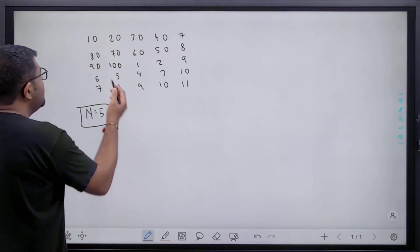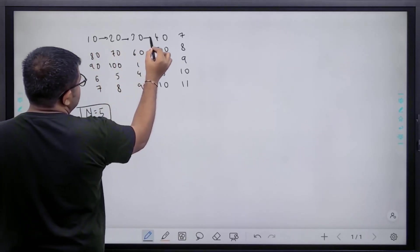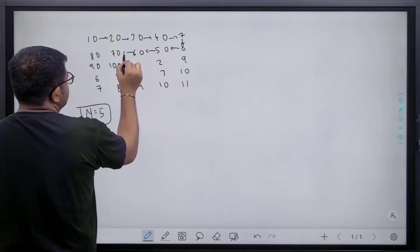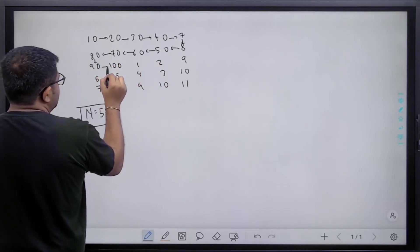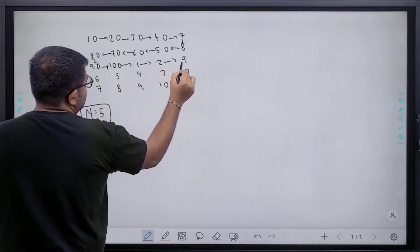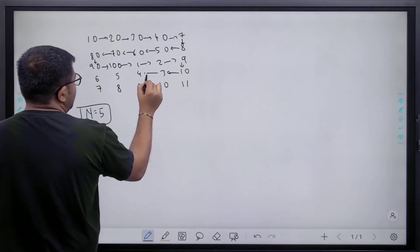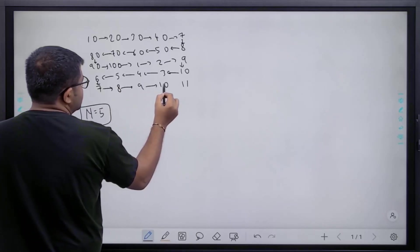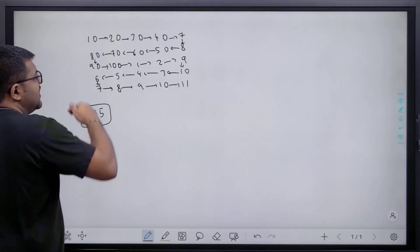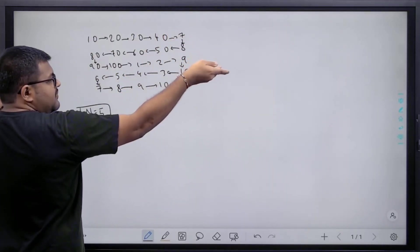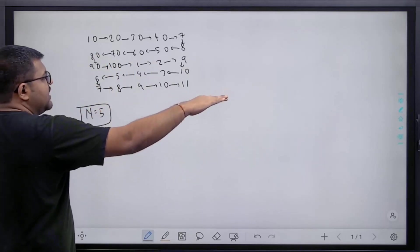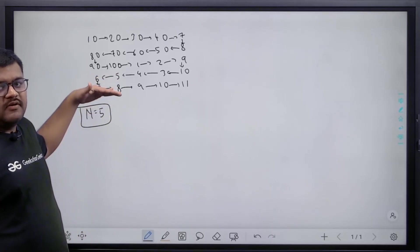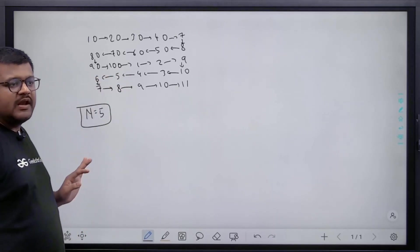What is snake pattern? Starting from the first row we will go in right direction, then we will come down. Here we will go in left direction, then come down, then go in right direction, then come down, then go in left direction, and so on until we reach the last row, until we finish the last row.